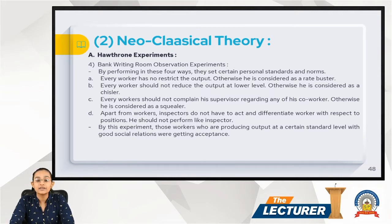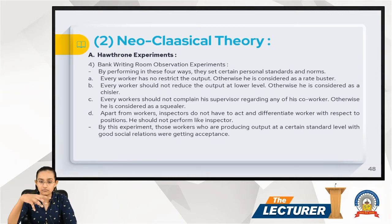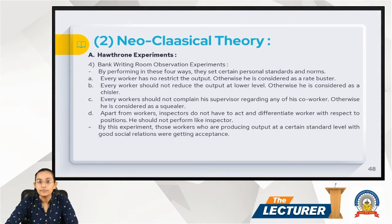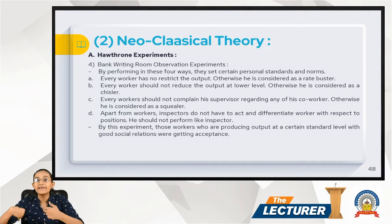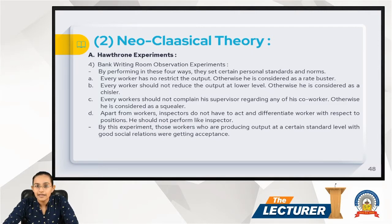Output restriction is that the piece rate system is set up. So when we use the piece rate to produce, output restriction means every worker should not reduce the output at a lower level.